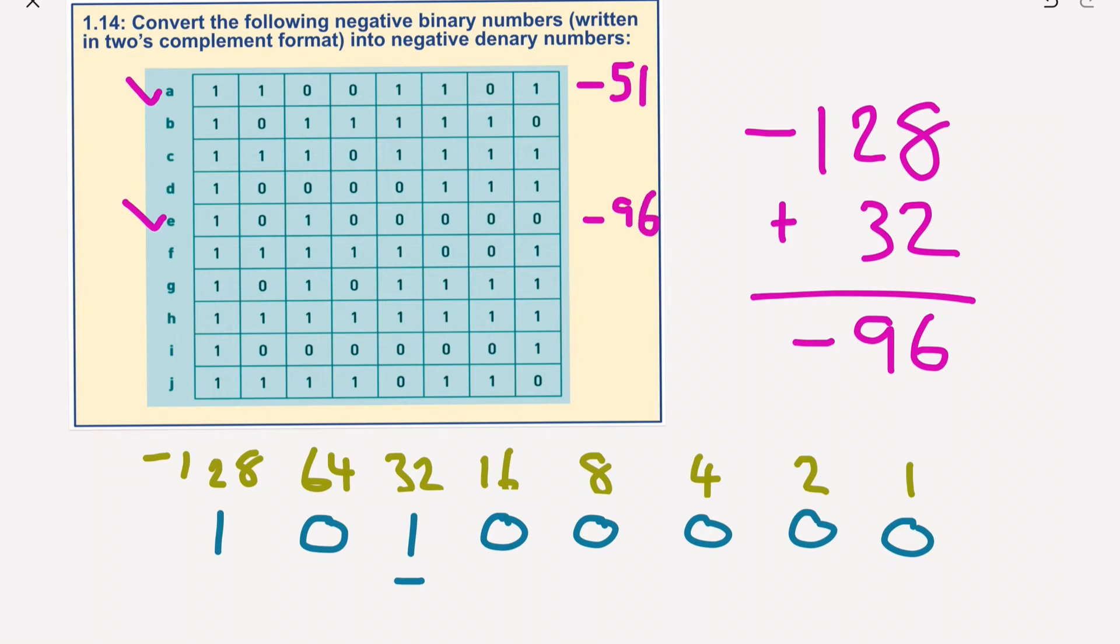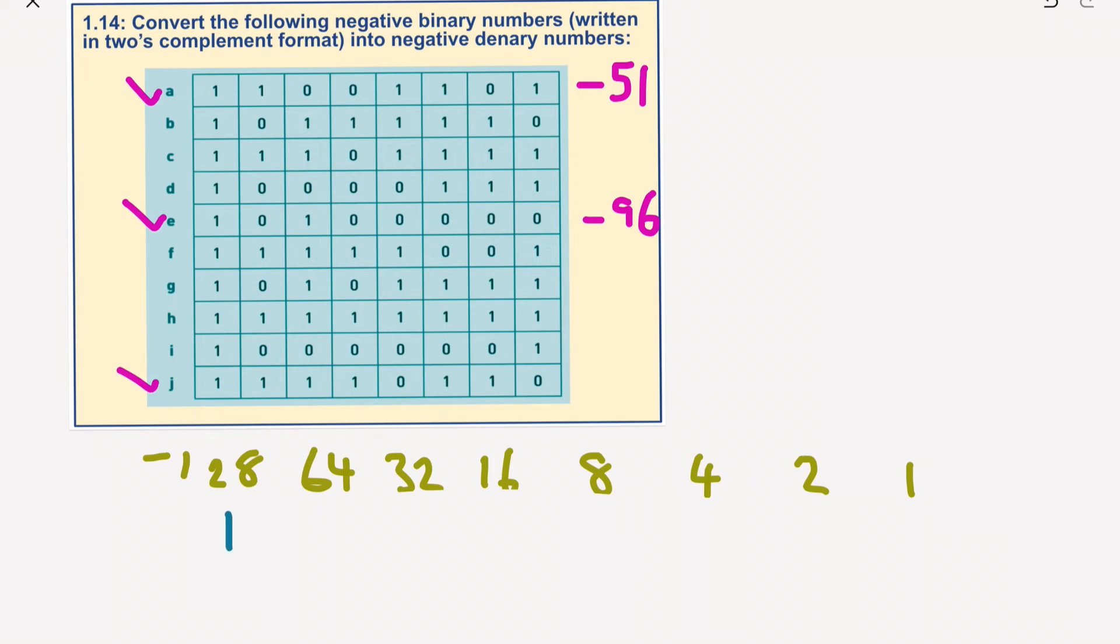And if I do the bottom one, J: 1, 1, 1, 1, 1, 1, 0, and minus the 8 that's missing. So again, let's add these numbers together. 64 plus 32 plus 16 plus 4 plus 2 would give us 118.